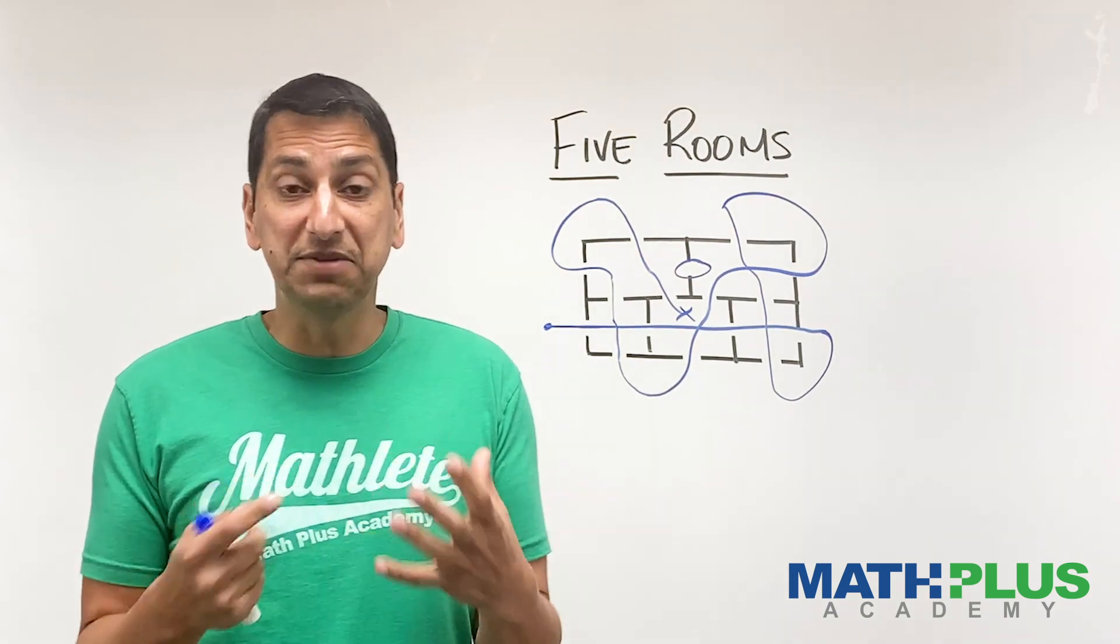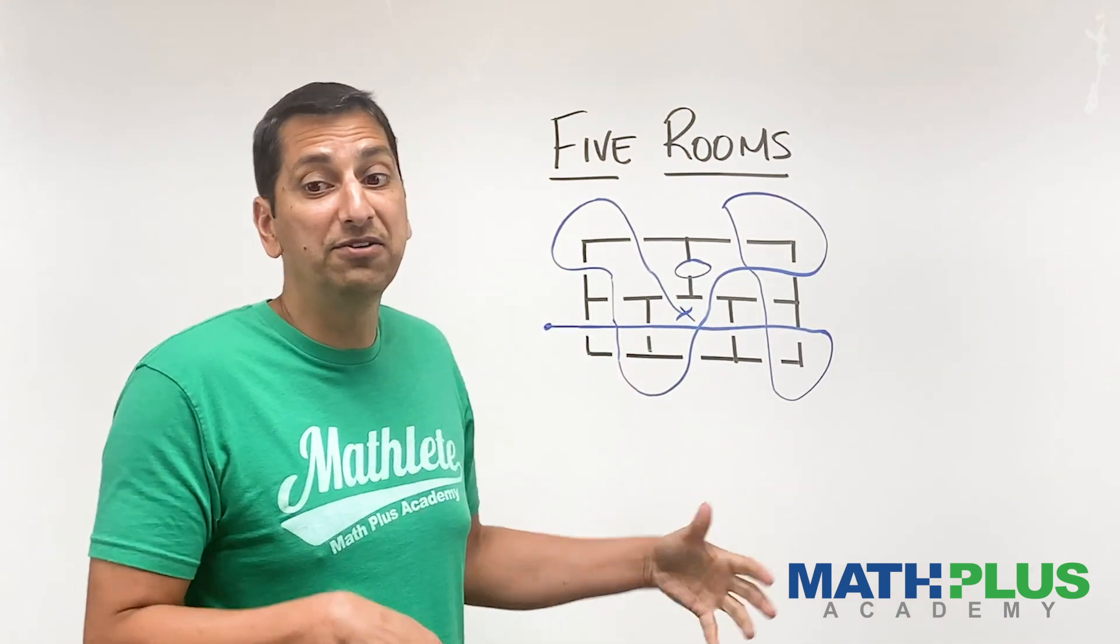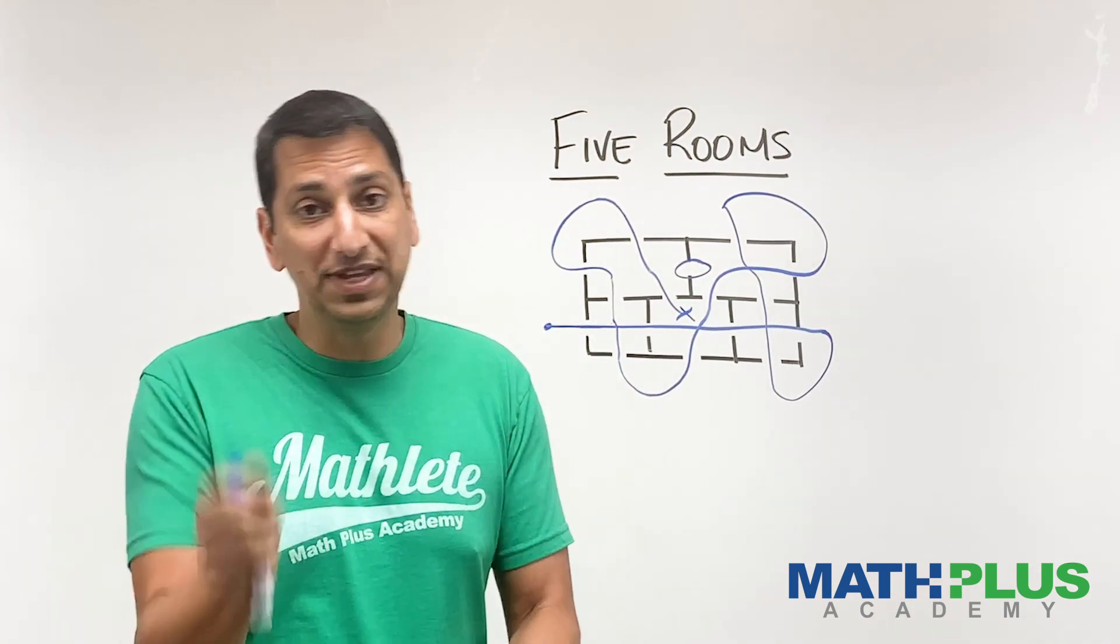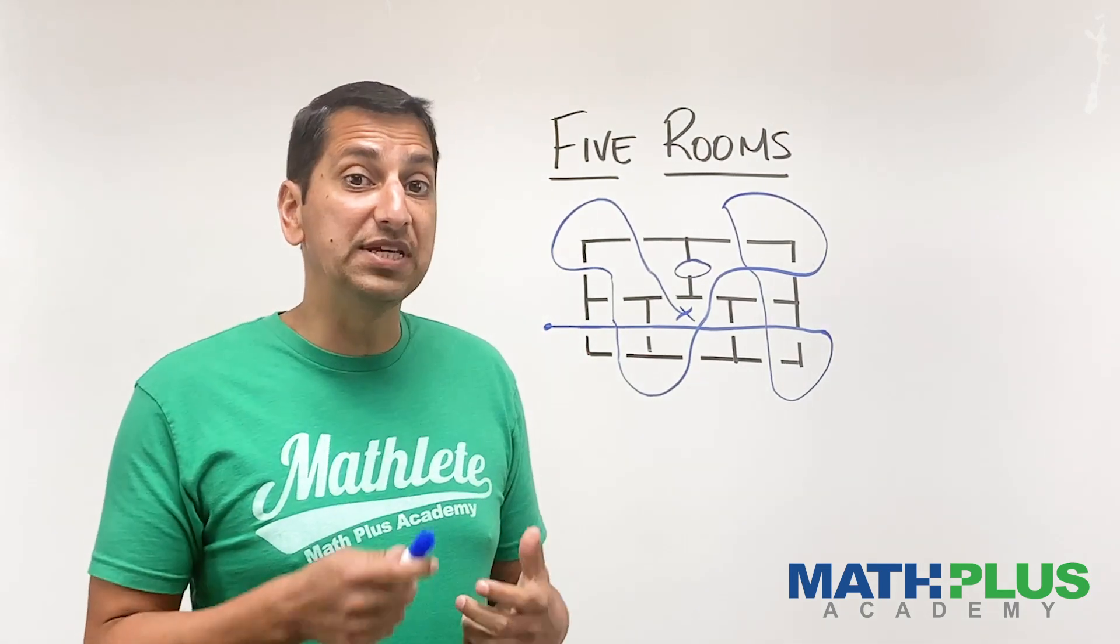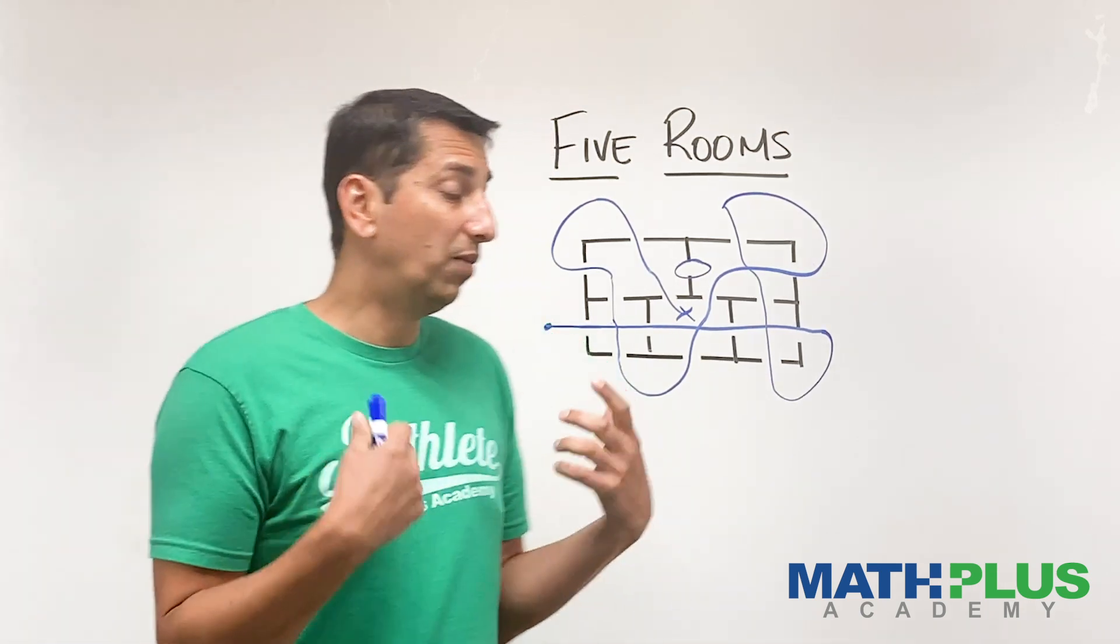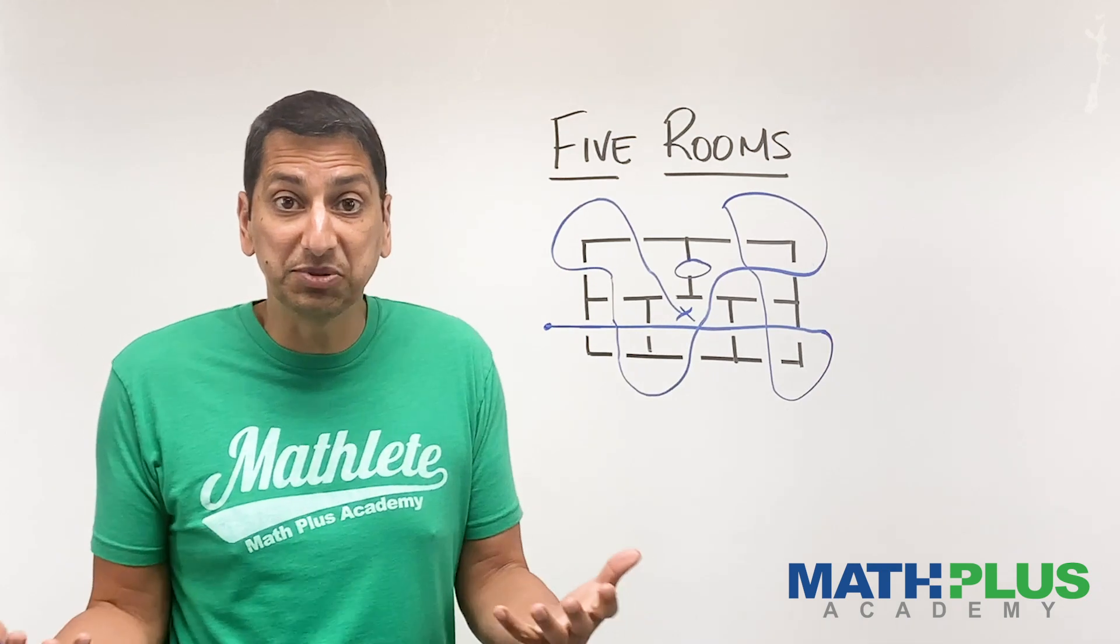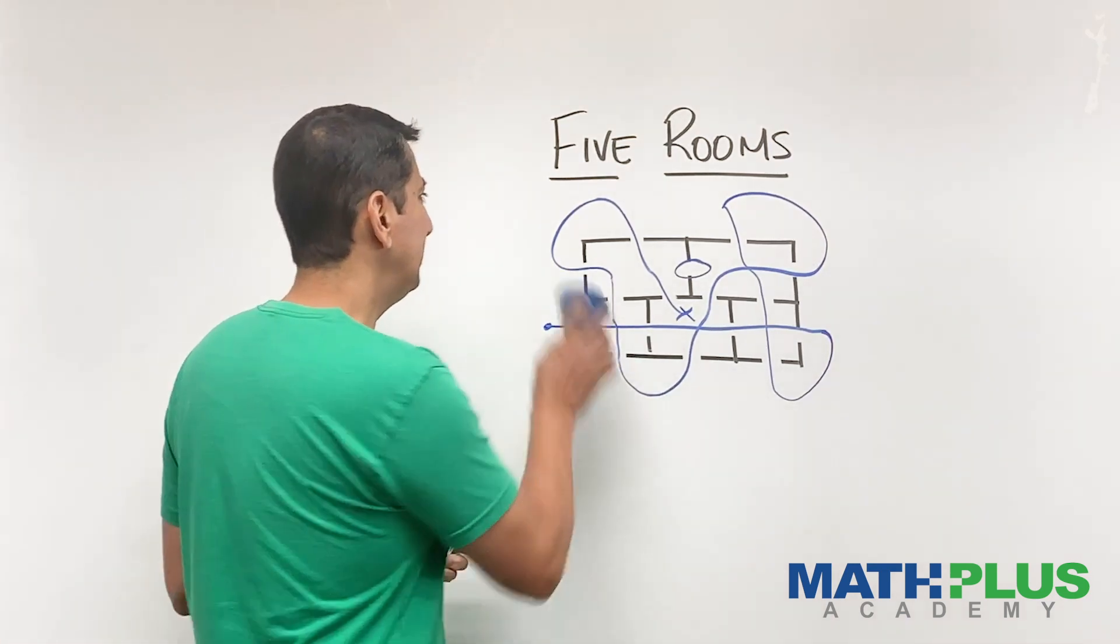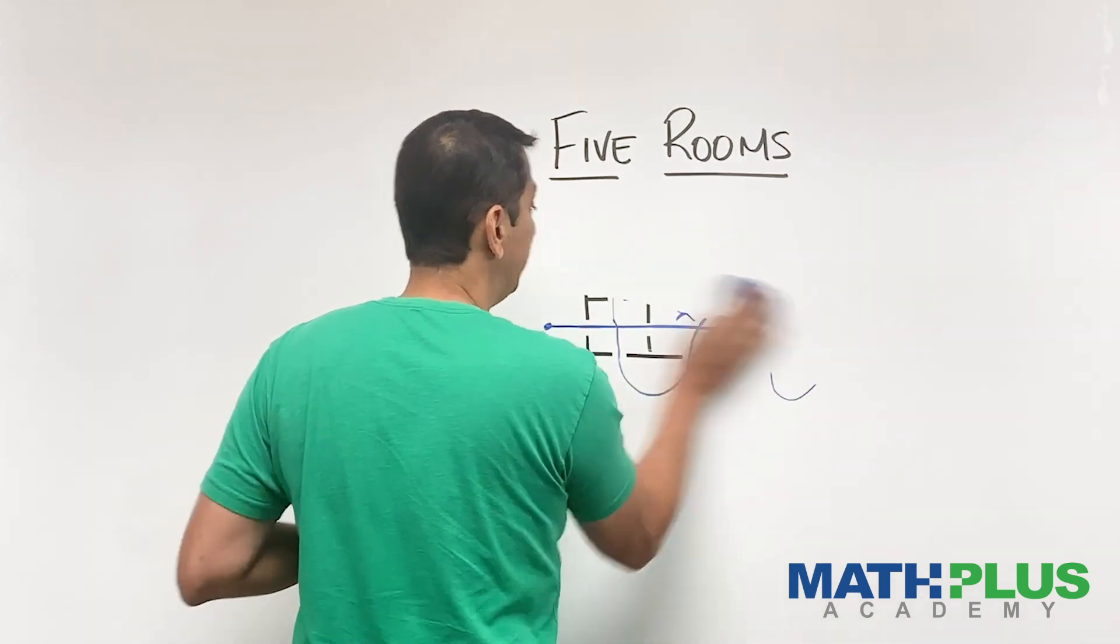So come up with a reason why this can never be solved, if indeed you think it can never be solved. Now, as we often see with these kinds of problems, there's a lot to keep track of. You'd have to draw many versions of this or erase a lot and try all these different things. It's going to be very confusing to keep track of all that. So what I often recommend, and I will recommend here, is try a simpler problem.